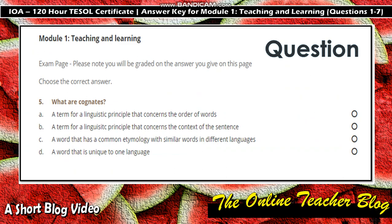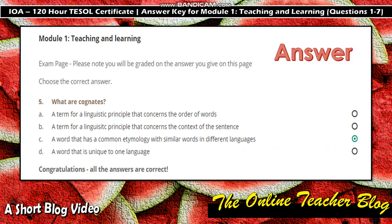Question 5: What are cognates? A) A term for linguistic principles concerning the order of words, B) A term for linguistic principles concerning the context of a sentence, C) A word that has a common etymology with similar words in different languages, D) A word that is unique to one language. The answer is letter C: a word that has a common etymology with similar words in different languages.